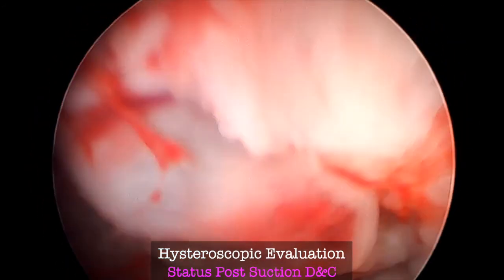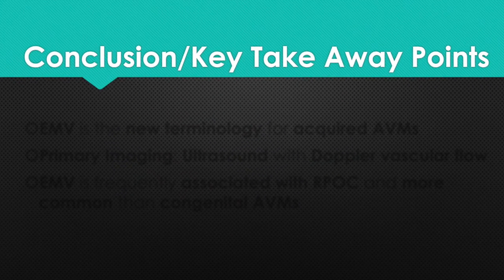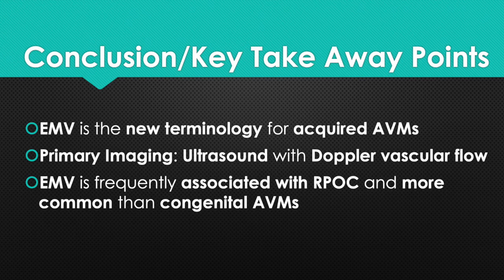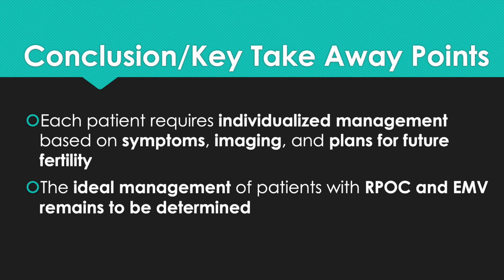The patient presented to clinic two weeks post-op with a resolution of her AUB symptoms and a negative beta-HCG. In conclusion, EMV is the new terminology for acquired AVMs, and the primary imaging is ultrasound with Doppler vascular flow. EMV is frequently associated with retained products of conception and more common than congenital AVMs. Recent literature states that EMVs with retained products of conception may be a normal transient placentation phenomenon due to lower hemorrhage risk than previously suspected. Uterine artery embolization should be considered on a case-by-case basis, with each patient requiring individualized management based on symptoms, imaging, and plans for future fertility. The ideal management of patients with retained products of conception and enhanced myometrial vascularity remains to be determined.